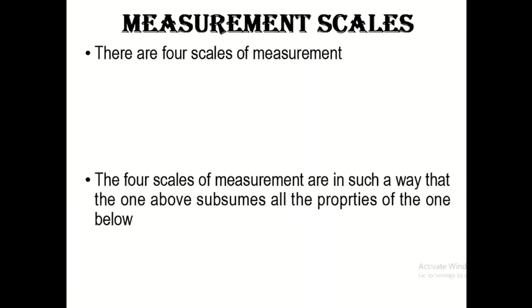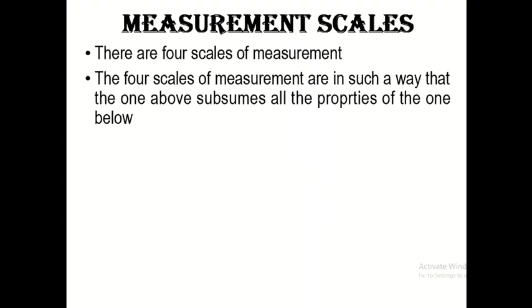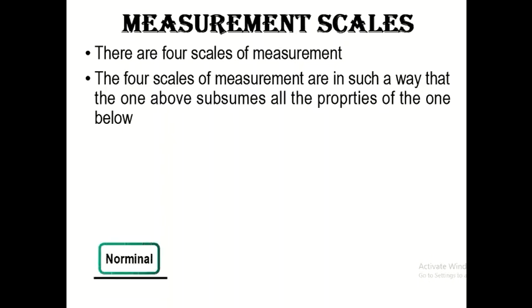The four scales of measurement are arranged so that the one above has all the properties of the one below. The first measurement scale has its own property; the second has its own property plus all properties of the first; the third scale has all properties of the second and first. So the lowest is the nominal scale, above it is the ordinal scale, then the interval scale, and at the top is the ratio scale.